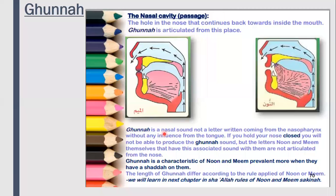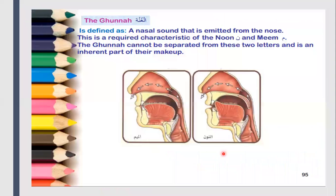The Ghunnah is a sound and not a letter, so there is no effect of your tongue on the Ghunnah. The Ghunnah is applied on the following two letters: the meem and the noon. Let's discuss on the next slide what exactly we mean when we say Ghunnah.